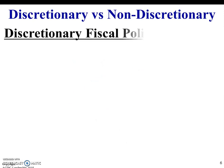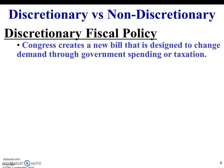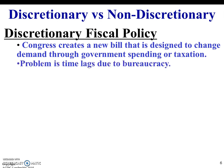Discretionary versus non-discretionary fiscal policy. Discretionary fiscal policy is when Congress creates a new bill designed to change demand through government spending or taxation. They can either increase or decrease spending, or increase or decrease taxes. The problem with this approach is that it time lags due to bureaucracy. If you follow the news, you know how difficult it is for Republicans and Democrats to agree on anything. So if you wanted to implement something like this, it takes time.